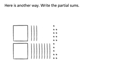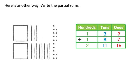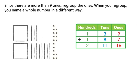Here is another way. Write the partial sums. Since there are more than 9 ones, regroup the ones. When you regroup, you name a whole number in a different way. 16 ones equals 1 ten plus 6 ones.